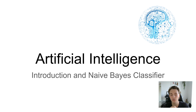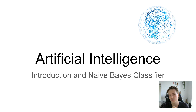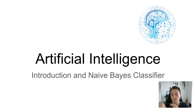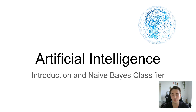Welcome to the first video in this new tutorial on artificial intelligence. In this video we're going to talk about an introduction to AI — what artificial intelligence is and how it's used — and I'm going to show you some different examples. At the end of the video I'll show you a naive Bayes classifier as a kind of 'hello world' program for AI, where we use some code to make predictions on a dataset.